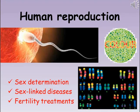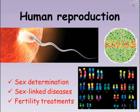Humans, like most animals and plants, reproduce sexually. This means that each individual is a new genetic combination from two different parents. This video will look at how sex is determined in humans, why some diseases are sex-linked and so mostly affect males, and also look at some fertility treatments and how they could be of use to people with different fertility problems.